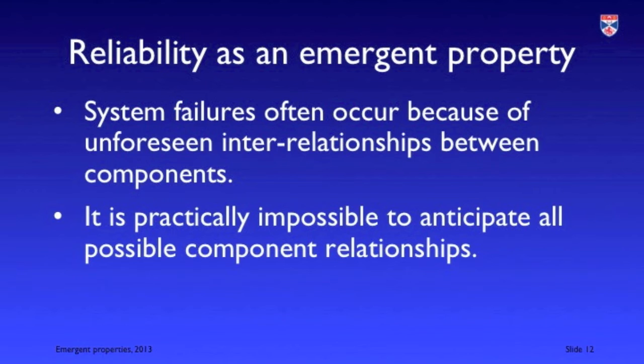Reliability as an emergent property: we know reliability depends on the interrelationships between components, and when we have unforeseen or unanticipated relationships, we may get a system failure. Because it's practically impossible to anticipate all potential component relationships in a complex system, we can never be sure systems will not fail. We must always work on the assumption that some failure mode remains in the system.